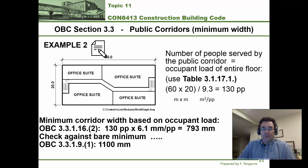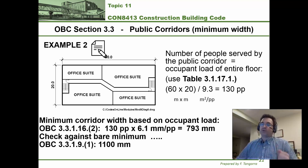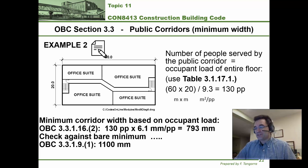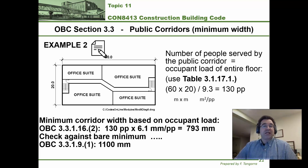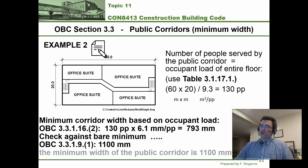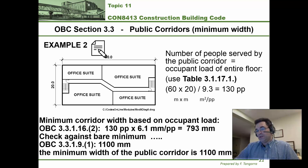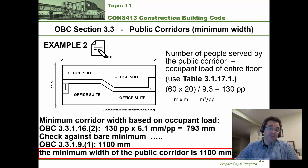Using sentence 3.3.1.16.2, we apply 6.1 millimeters per person: 130 times 6.1 gives 793 millimeters. We check that against the bare geometric minimum of 1,100 millimeters. Between 793 and 1,100, we pick the larger one. So the minimum width of the corridor is 1,100 millimeters. Make the final answer obvious and unmistakable.